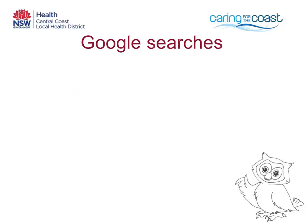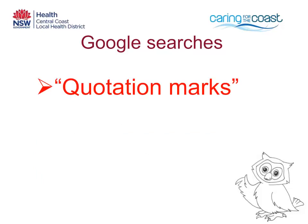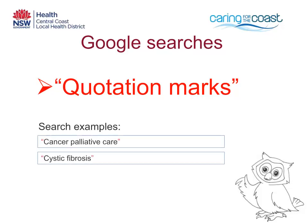Another tip when searching Google is to use quotation marks. These will help you do a phrase search. For example, "cancer palliative care" in quotation marks will return results that have those three words together in that order in a sentence.